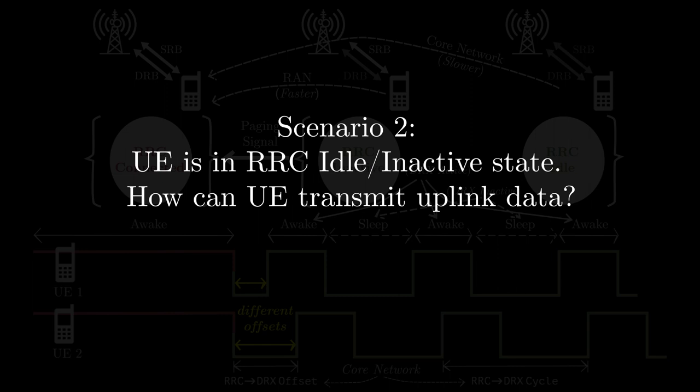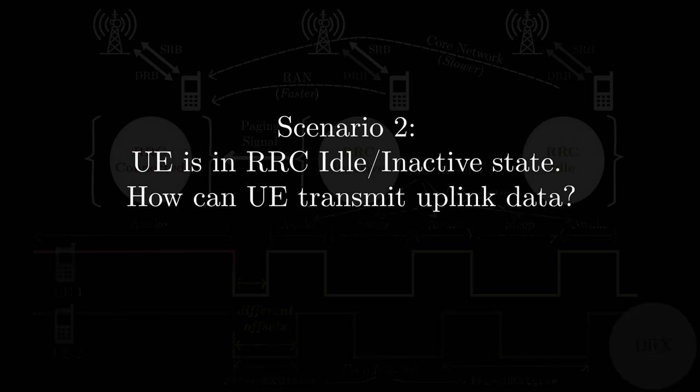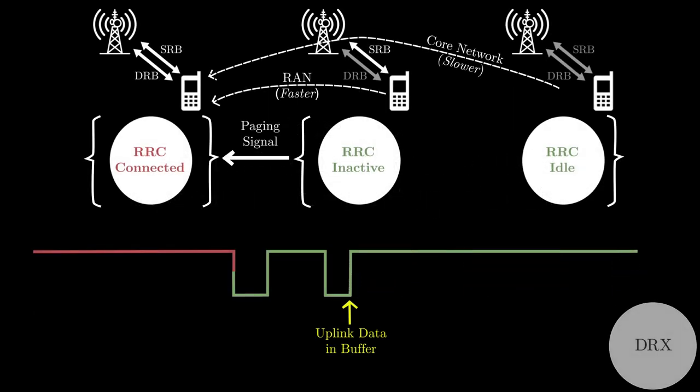Next, assume a second scenario where UE is in RRC idle or RRC inactive state, and UE wants to transmit uplink data. Before transmitting uplink data, UE has to change its state back to RRC connected state. For this purpose, UE sends a scheduling request to base station, and base station invokes the procedure to change UE's state to RRC connected state. Note that UE has to send scheduling requests only during the time slots configured for it by base station.